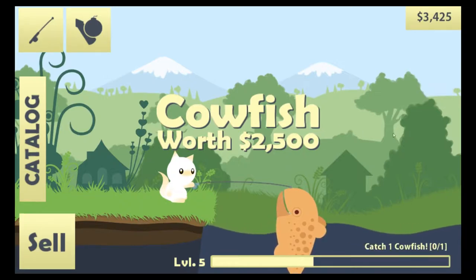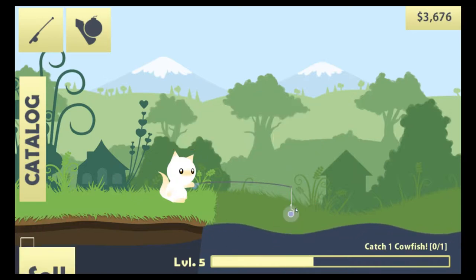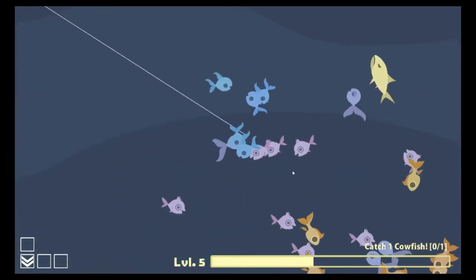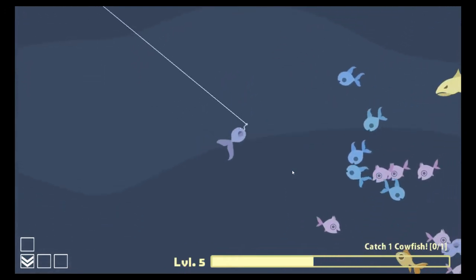Reel them in nice and slow. Got the cowfish. Moo. Achievement, moo. Nice. Okay. New quest.